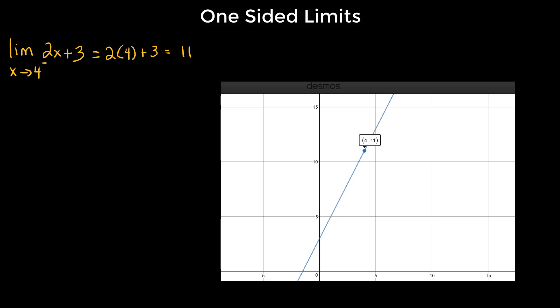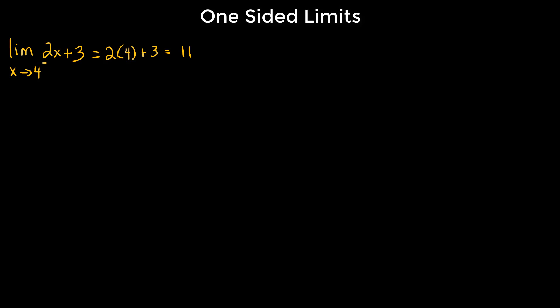Let's take a look at another example. Suppose we're asked to compute the limit as x approaches 2 from the right of (x² - 4) / (x - 2). If we ask about continuity at x = 2, this is a rational function — just check the denominator. Plugging in 2 gives 0 in the denominator, so there is no continuity at x = 2.